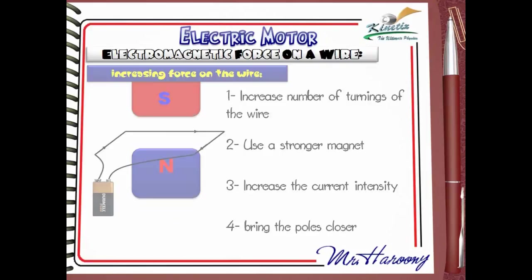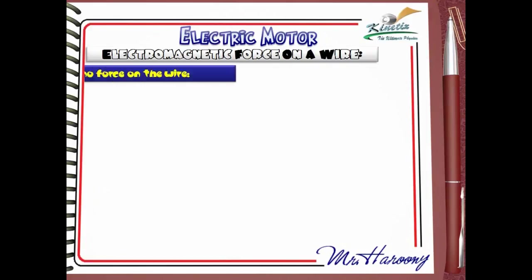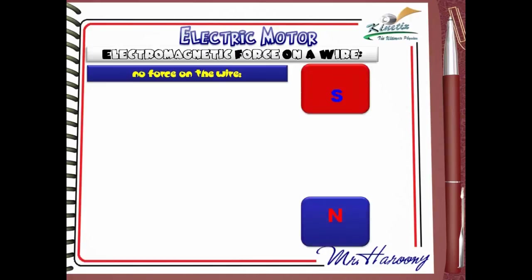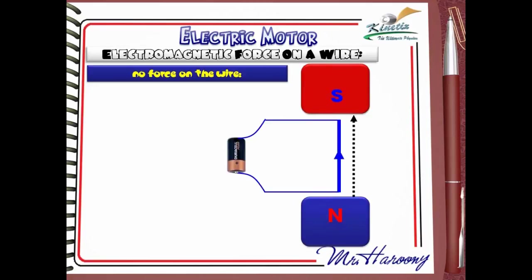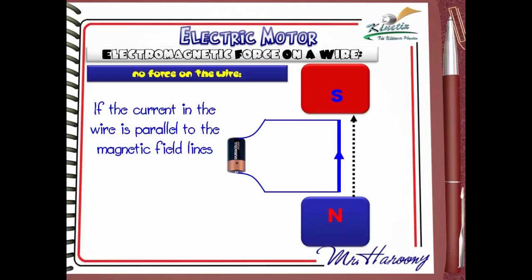Before ending this part, one last case must be discussed. There is a situation where a wire carrying an electric current is placed inside a magnetic field but no force is applied to the wire. The dotted black arrow shows the direction of the magnetic field. It is clear from the diagram that the current and the magnetic field are parallel to each other, so the wire will not move.